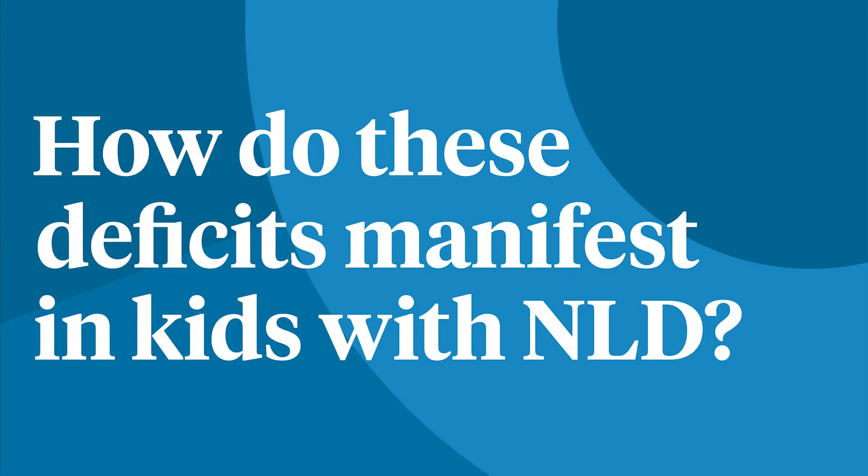How do these deficits manifest in kids with NLD? In addition to the different combinations of symptoms, kids with NLD also vary along a spectrum of severity. On the one hand, there are kids who are extremely high functioning but socially awkward, a little clumsy, and disorganized. Other kids are more pervasively affected and function with more difficulty in many areas. These kids often struggle to learn everything that isn't rote or literal.